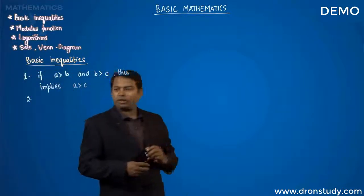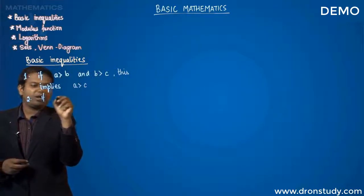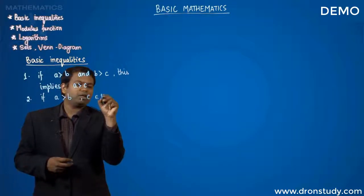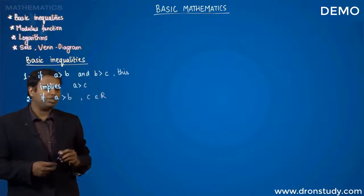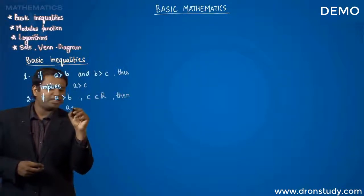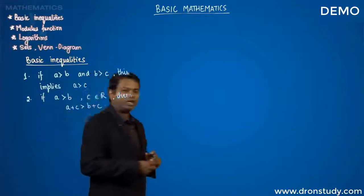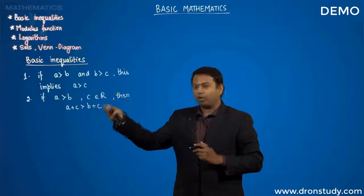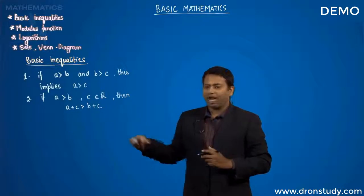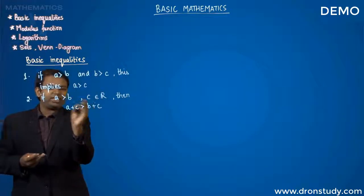The second important inequality: if a is greater than b and c is some number belonging to the real numbers, then a plus c is greater than b plus c. No matter what real number you add to both sides, the inequality sign remains the same.